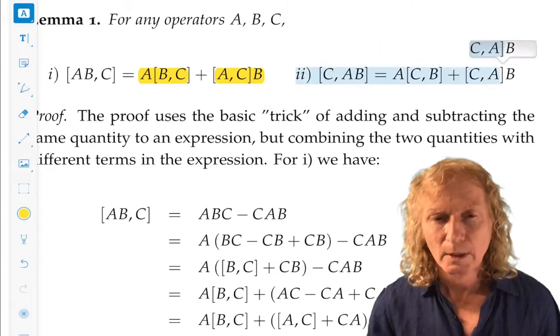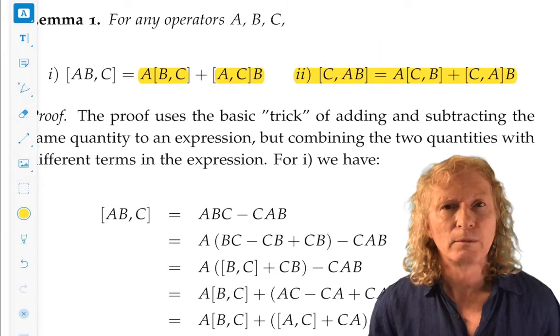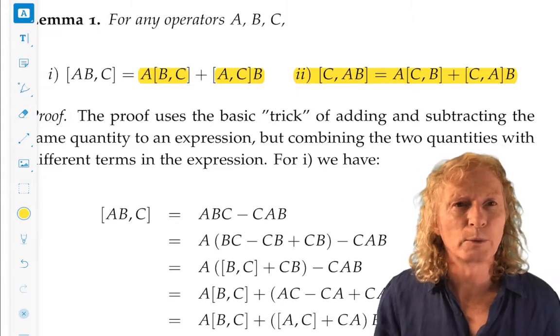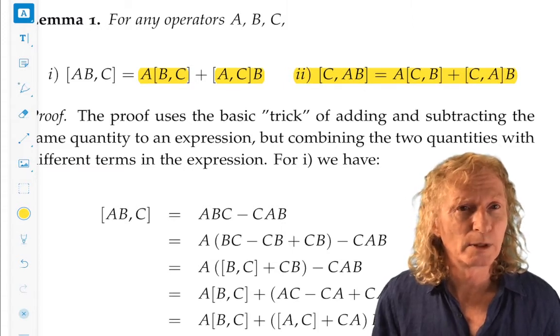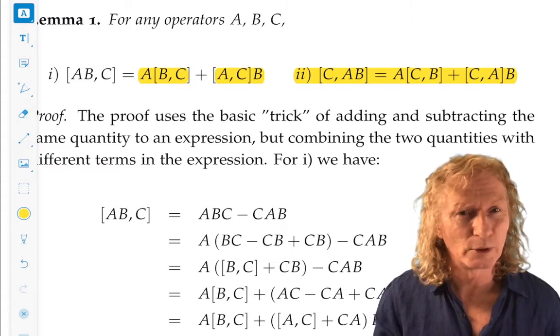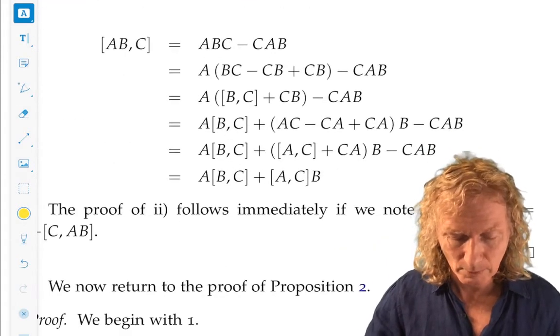But the second one, stare at that. That's just the negative of, well, the first one is commutator AB with C. The second one is commutator C with AB. That's minus the commutator of AB with C. And so, you should easily be able to get it once you've convinced yourself that i is true.